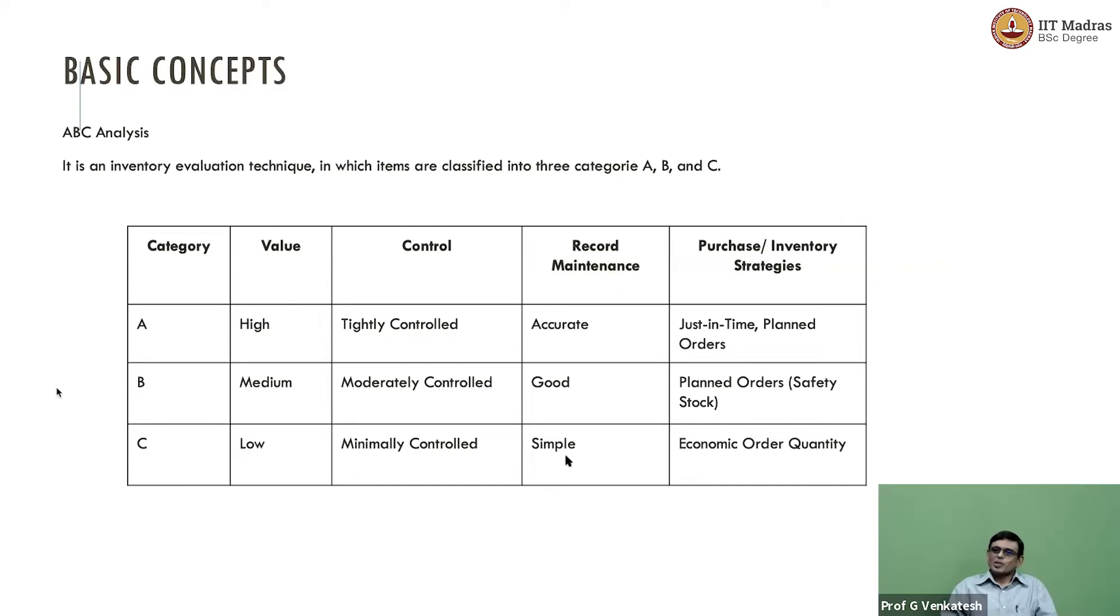So, we are B, presumably. And for B, what you have to do is, of course, the record keeping has to be good. Again, it does not need to be minute to minute live, but at least at the end of the day, you have to have a very clear picture of where you stand. And I think from an ordering perspective, there is a plan in place on when to order, how much to order, etc.